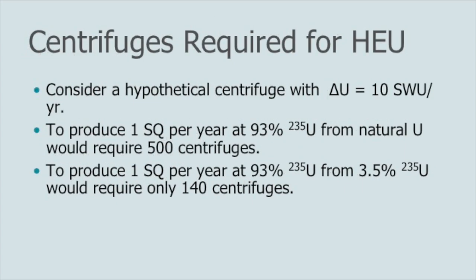So consider a hypothetical centrifuge that has 10 separative work units per year. I have a centrifuge in my laboratory that will make 10 SWUs per year. To make one SQ at 93%, I've got to have 5,000 separative work units, as I just said on the previous slide. And so at 10 SWUs per centrifuge, I need 500 centrifuges in my cascade. If I want to make one SQ, if I've already got my material enriched to three and a half percent, and I use that material in my cascade to feed my cascade, I'm only going to require 140 centrifuges to go from three and a half to 93.